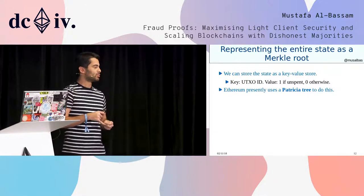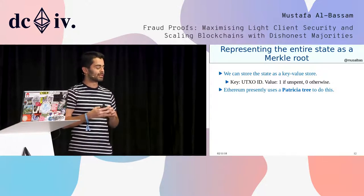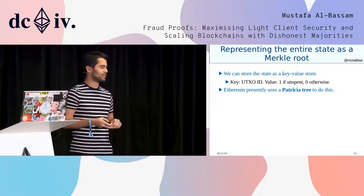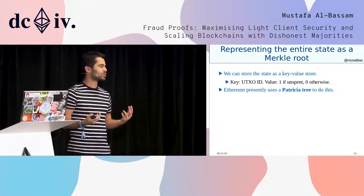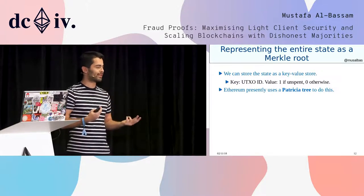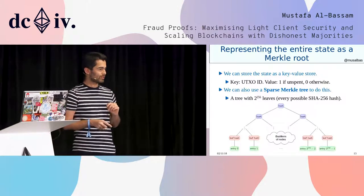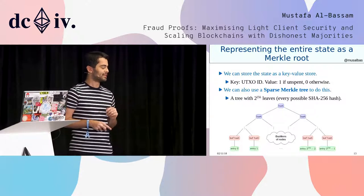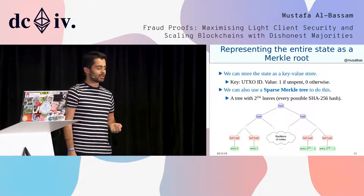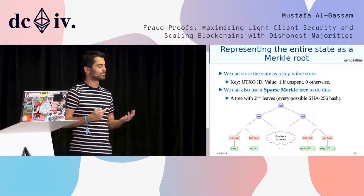To do this, we need some way to commit to the state of the blockchain in the block headers. At the moment, Ethereum uses a Patricia trie to effectively represent the entire state of the blockchain in a single root. One of the proposed changes in Serenity is to actually change this structure to a much simpler structure called a sparse Merkle tree, which is a much simpler way to represent the entire state as a single Merkle root.